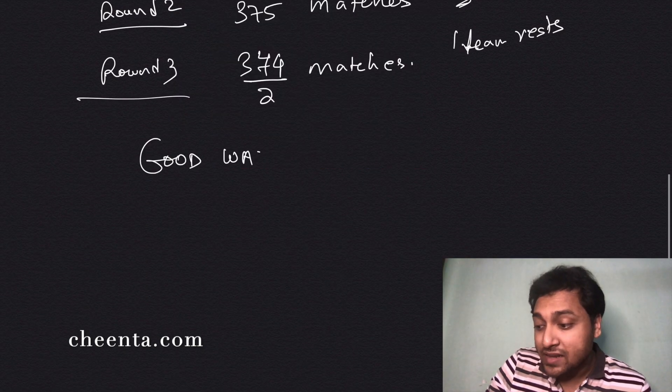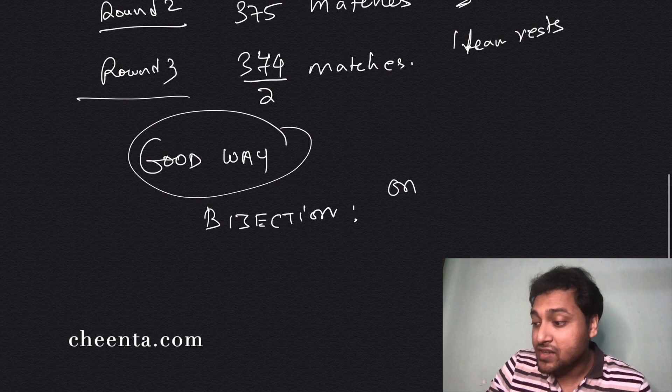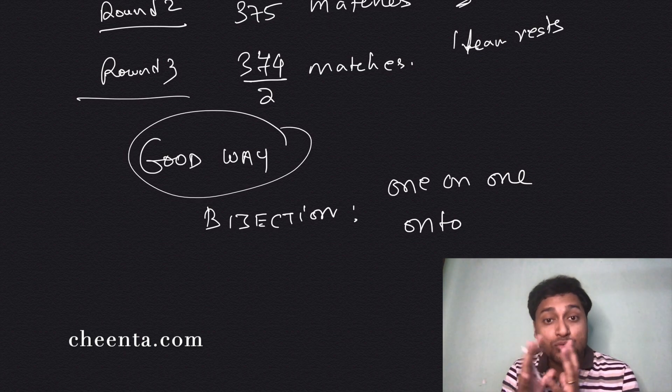What is a good way? The good way is using bijection. I will remind you what bijection means: bijection means there is a one-to-one and onto mapping between two sets.